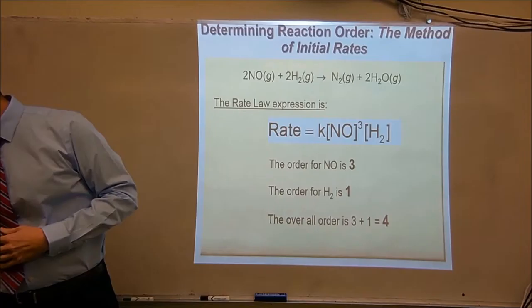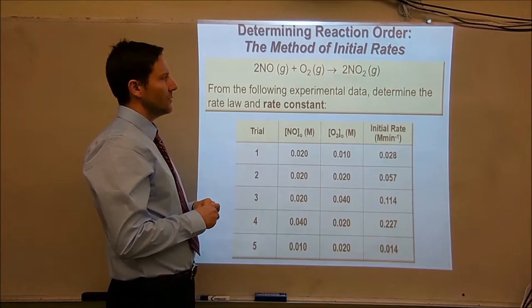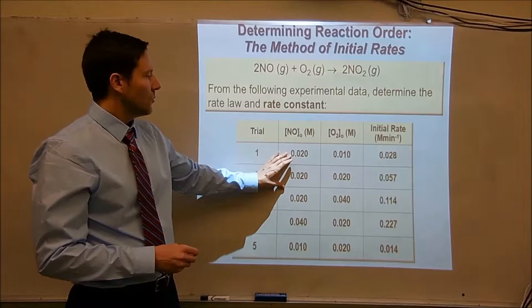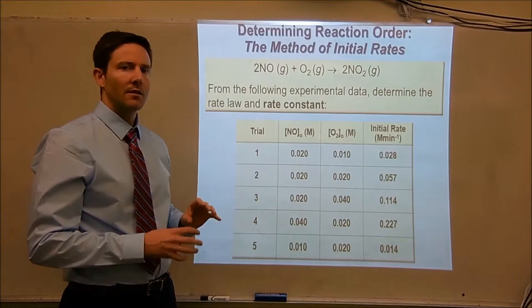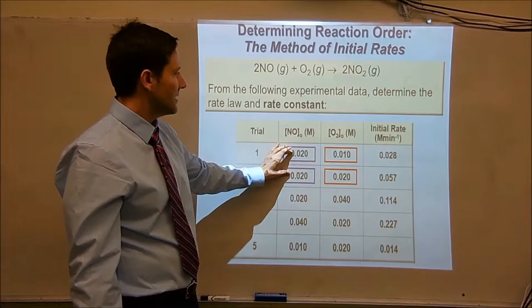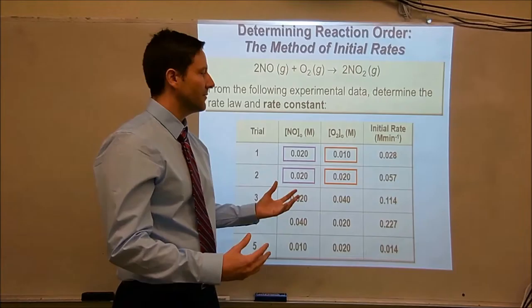How do we figure out what the rate constant is? That's always experimentally determined. So let's do a problem where we figure out the rate constant. We're going to use the method of initial rates again to solve for the order of the reactants so we can find a rate law expression. We have five trials here. If you look at trial one and trial two, nitric oxide stays the same and oxygen is doubled.